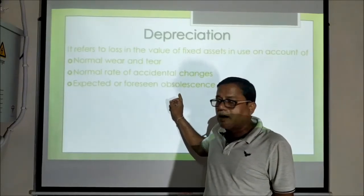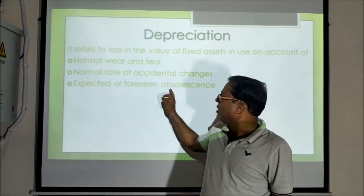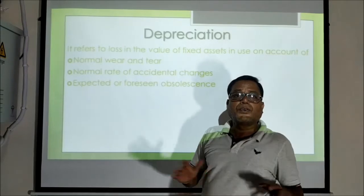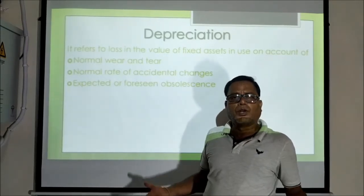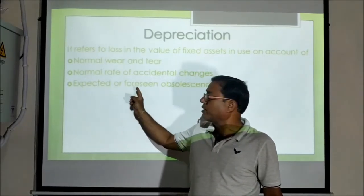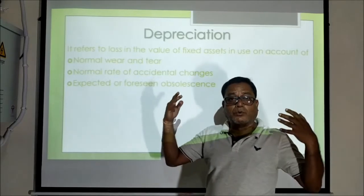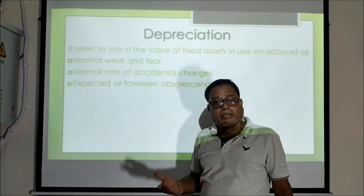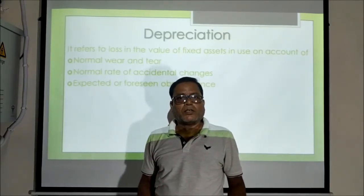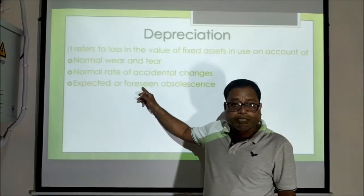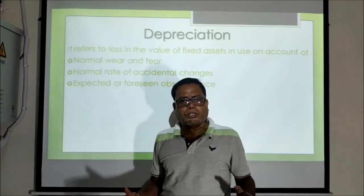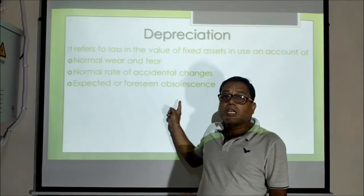Here we have two different terms: expected or foreseen obsolescence, and unexpected or unforeseen obsolescence. Expected means something we can anticipate; foreseen means something we can visualize before it actually happens. Sometimes the value of capital goods falls due to expected reasons and sometimes due to unexpected reasons.